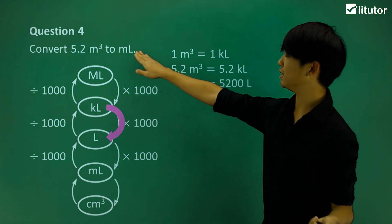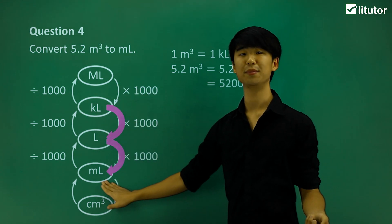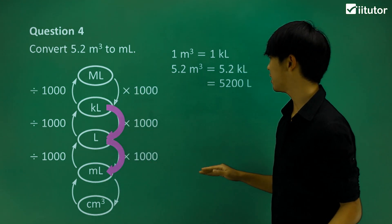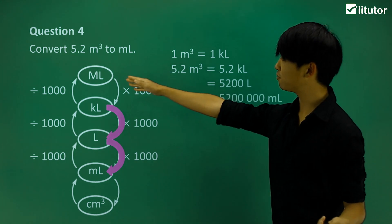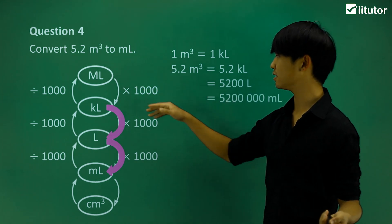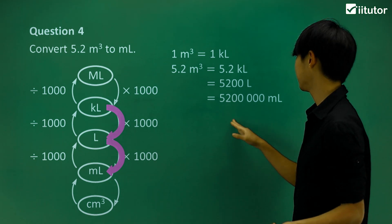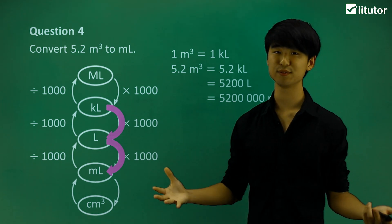Now, from liters, we still want milliliters. Then I'm going to go down to milliliters like this again. So multiply by another 1,000. So when I convert 5.2 meters cubed to milliliters, it will be 5,200,000 milliliters.